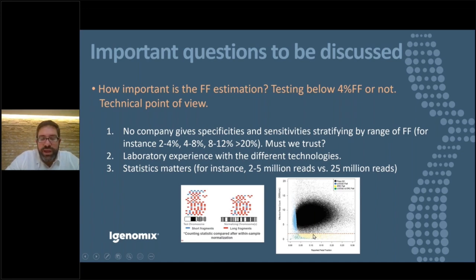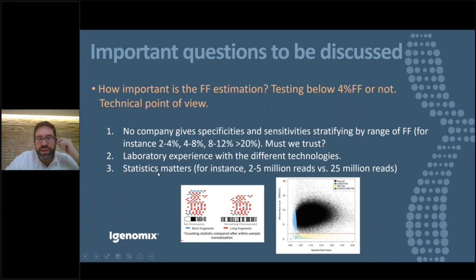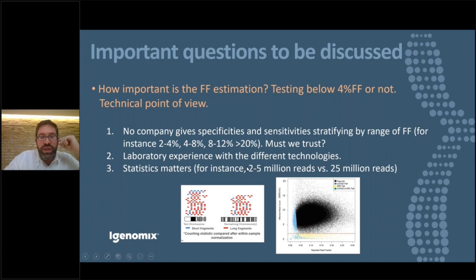There are platforms using only thousands of reads versus 10 to 25 million reads, and more reads make it easier to detect aneuploidies at lower fetal fractions. From a biological point of view, when you have a non-informative result due to low fetal fraction, guidelines generally recommend good ultrasound examination and invasive testing. But should we recommend invasive testing for all non-informatives due to low fetal fraction? This is important to understand. For twin pregnancies, the fetal fraction threshold must be doubled — if the standard is 4%, for twins you need 8%.